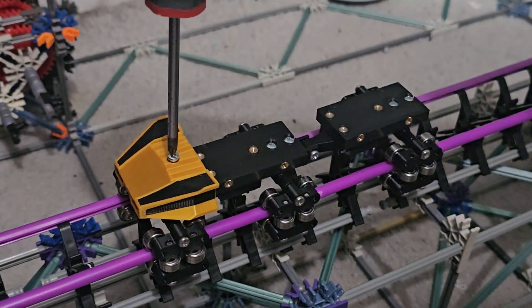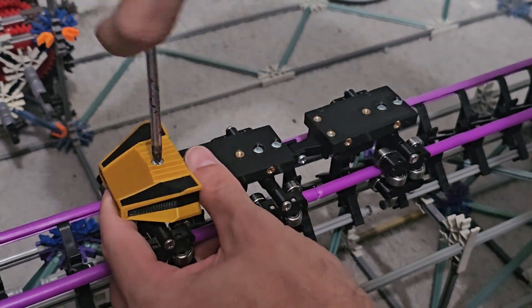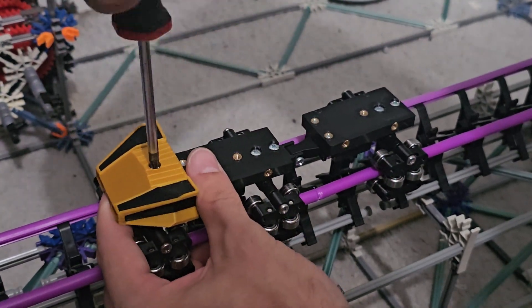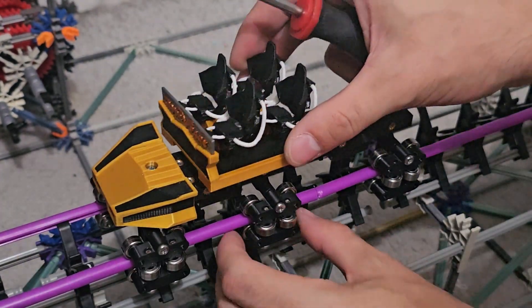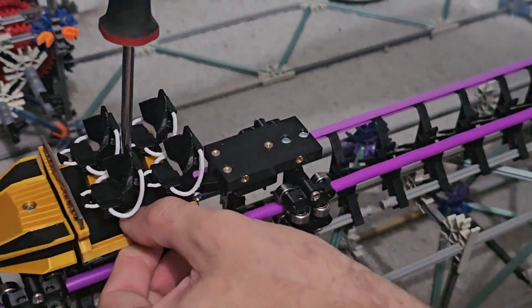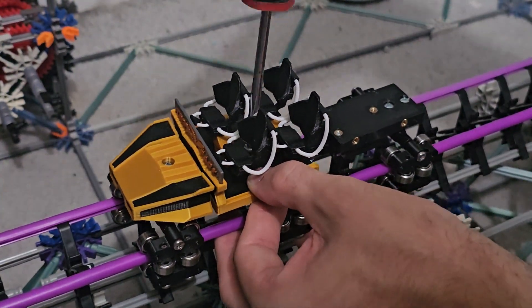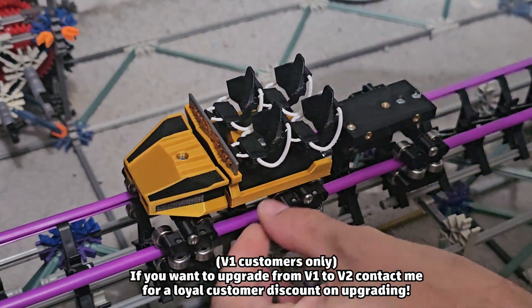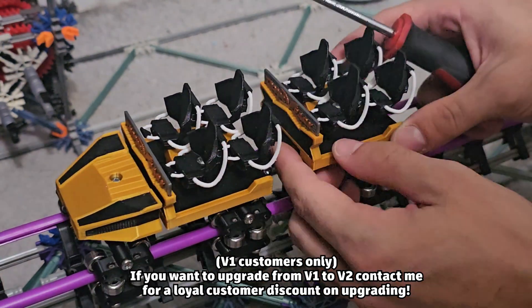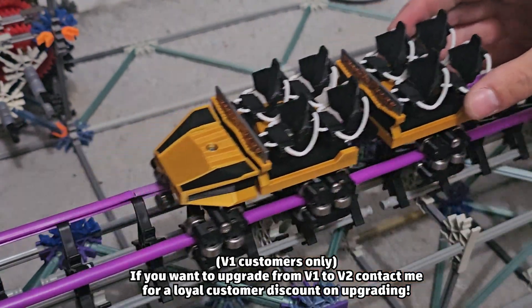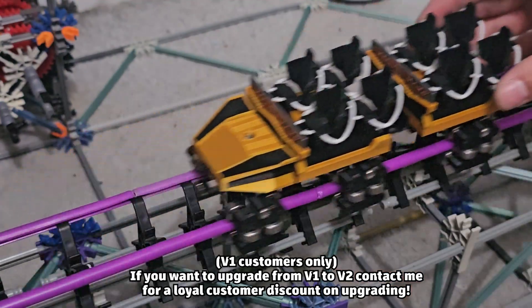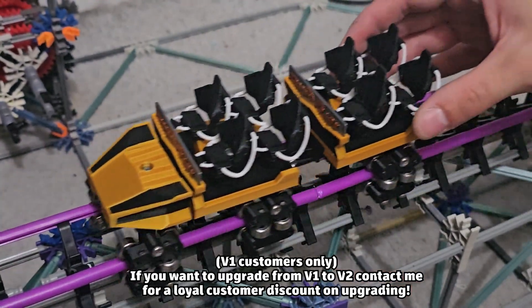The mounting system for top designs has remained broadly the same. However, because every single train system body is now the exact same print, there is only one mounting screw hole for every single design. It does make things a lot simpler, but unfortunately this means that you won't be able to use previous designs from version 1 on version 2.